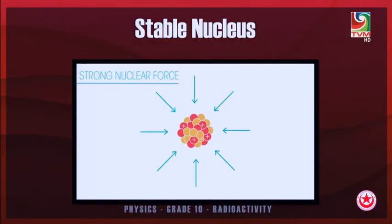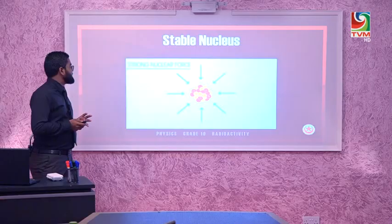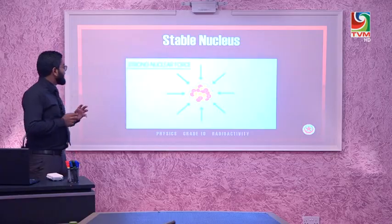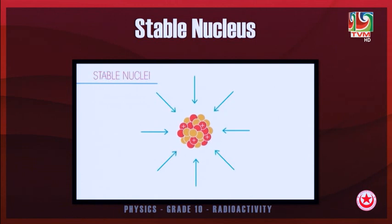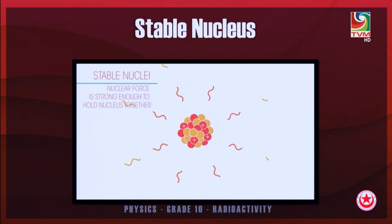Isotopes are said to be stable and sometimes unstable. A stable nucleus is bound by a strong nuclear force, which ensures that the protons and neutrons are strongly held inside the nucleus. That is why it is said to be a stable nucleus.